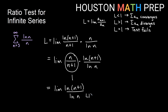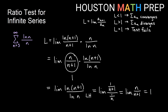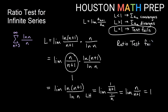Applying L'Hôpital's rule to ln(n+1)/ln(n): the derivative of ln(n+1) is 1/(n+1) and the derivative of ln(n) is 1/n. Multiplying by the reciprocal gives the limit of n/(n+1), which equals 1. So the overall limit for the ratio test is 1, meaning the test fails. We would need another test — the integral test, using the integral of ln(x)/x dx, would work here.